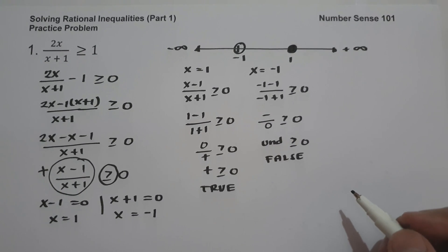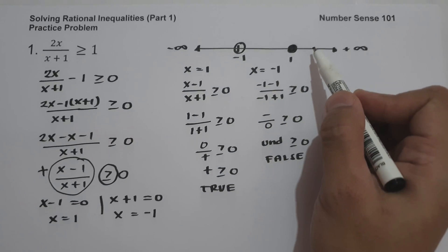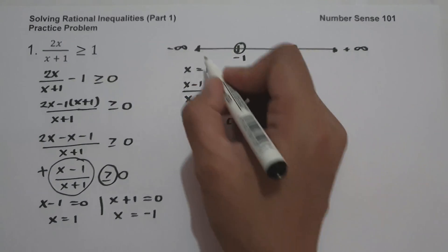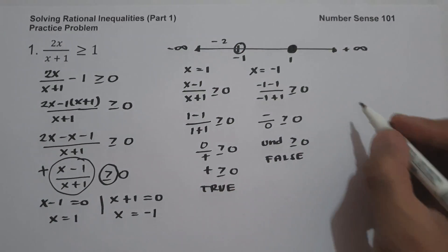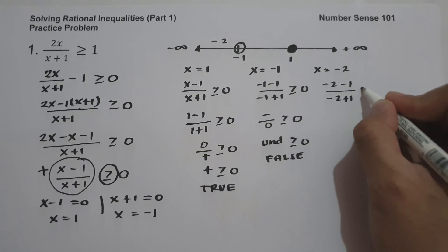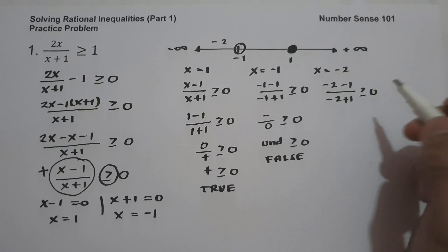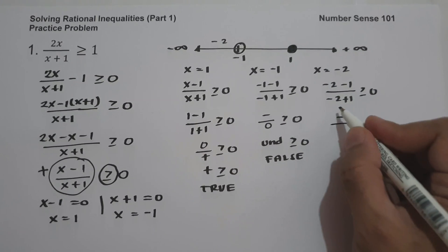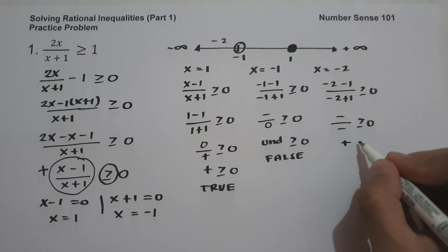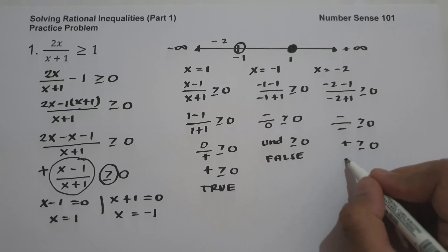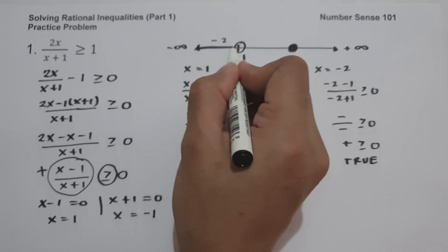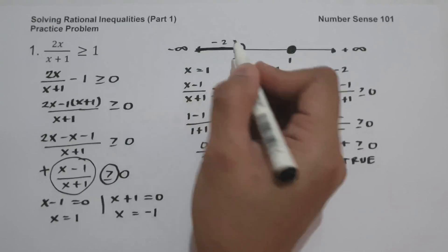Next, let us check which regions of the number line are included in our solution. Let's test a number less than negative 1, say x equals negative 2: negative 2 minus 1 over negative 2 plus 1 gives negative over negative, which is positive, greater than or equal to 0. That is true, so I'm going to shade this region to indicate it is part of our solution.